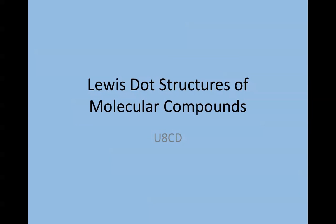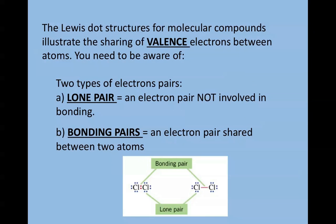In concept D, we're going to focus on molecular compounds and how to draw Lewis dot structures for those compounds. Lewis dot structures, when representing molecular compounds, illustrate the sharing of valence electrons between atoms. There are two vocabulary terms to be aware of.